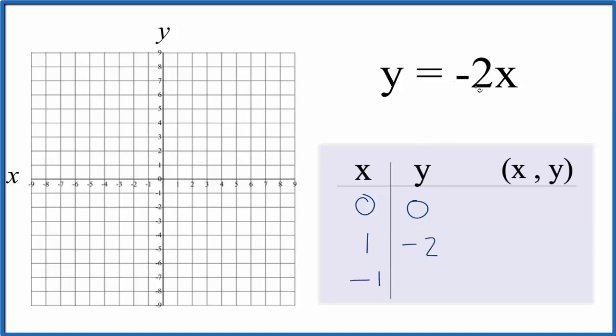And then negative 1. Negative 2 times negative 1 that's positive 2. So these are just values I made up. You could use any values but these usually fit pretty well on the graph paper.